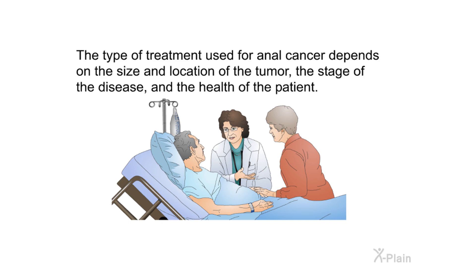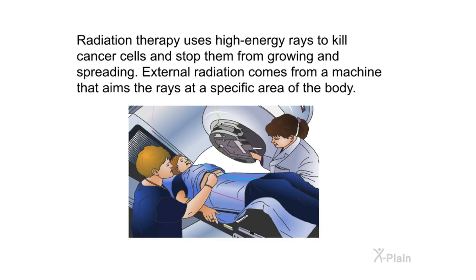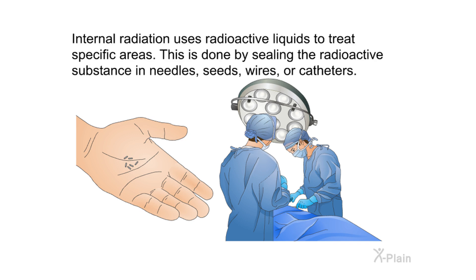The type of treatment used for anal cancer depends on the size and location of the tumor, the stage of the disease, and the health of the patient. Treatment may involve radiation therapy, chemotherapy, surgery, or some combination of these treatments. Radiation therapy uses high-energy rays to kill cancer cells and stop them from growing and spreading. External radiation comes from a machine that aims the rays at a specific area of the body.